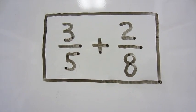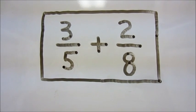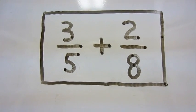Our problem is 3 fifths plus 2 eighths. In this method, we don't need a least common denominator, we just need a common denominator.